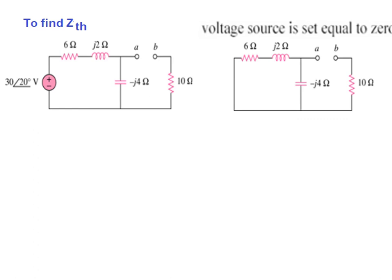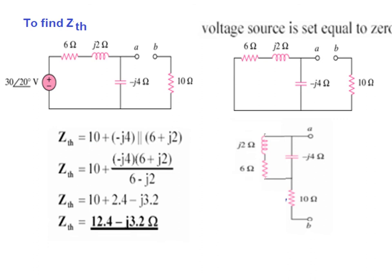When we short the source, this becomes the circuit. You can see that this branch is in parallel with −j4, so the circuit becomes a parallel combination. We solve those two in parallel and then add the 10-ohm to find Z_thevenin. So it is: 10 + (−j4 parallel with (6 + j2)). Using a calculator, the answer is 12.4 − j3.2 ohms. So this is Z_thevenin.